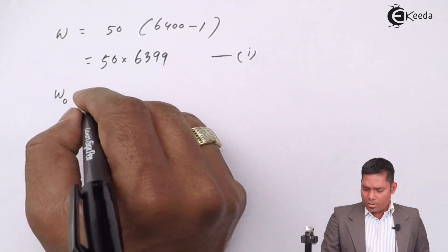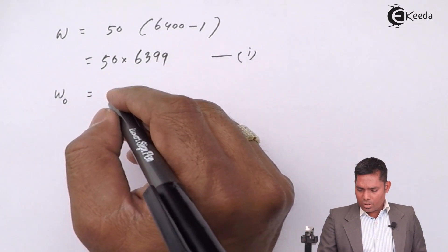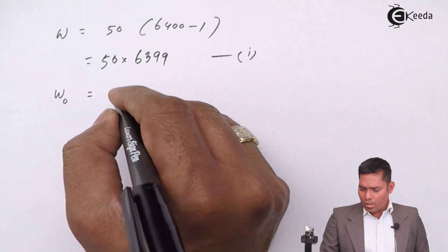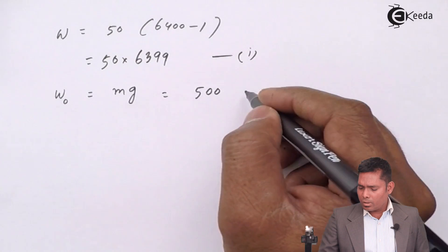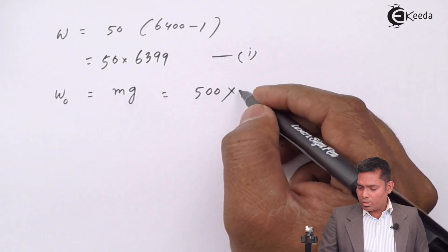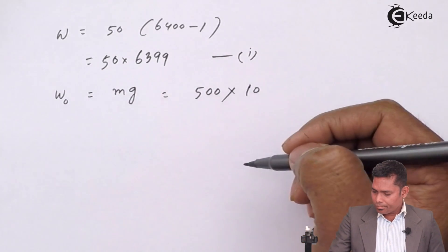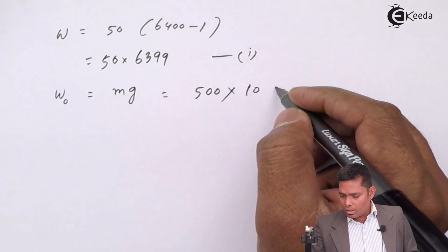Earlier, the weight was on the surface. On the surface, the weight is m and g on the surface, that is 500 kilograms into g is 10. This is 5000.